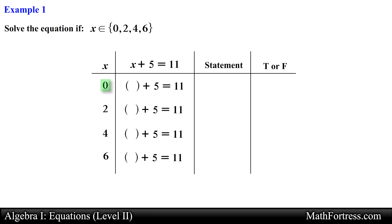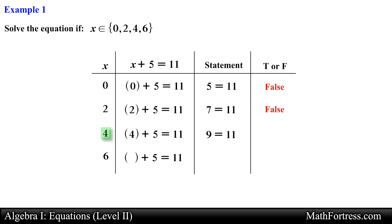Substituting the first element of the domain into the equation and simplifying yields the statement 5 is equal to 11, which is false. Next, substituting the second element 2 simplifies to 7 is equal to 11, which is false. Substituting the third element 4 into the equation yields the statement 9 is equal to 11, which is also false.